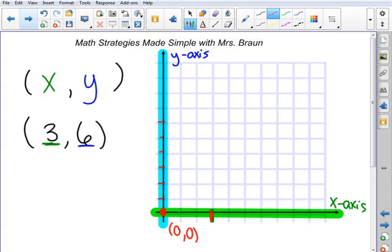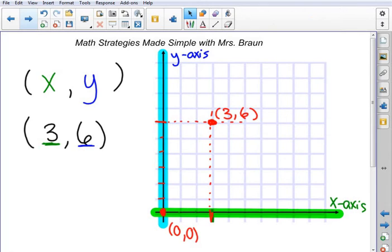4, 5, 6. Now, my point is going to be where those two lines intersect, which is right here. So this is the point (3, 6). I use my horizontal value on my x-axis and my vertical value on the y-axis to find where this point meets.